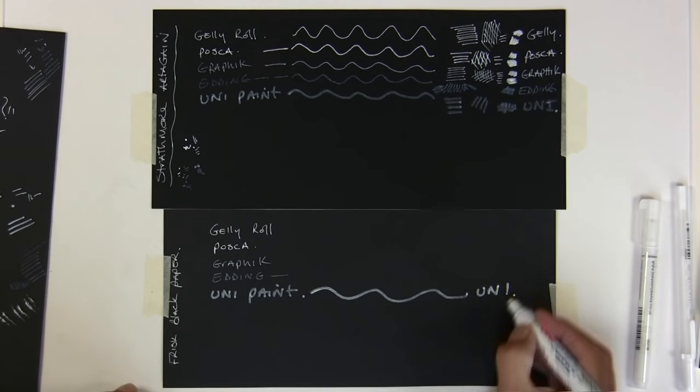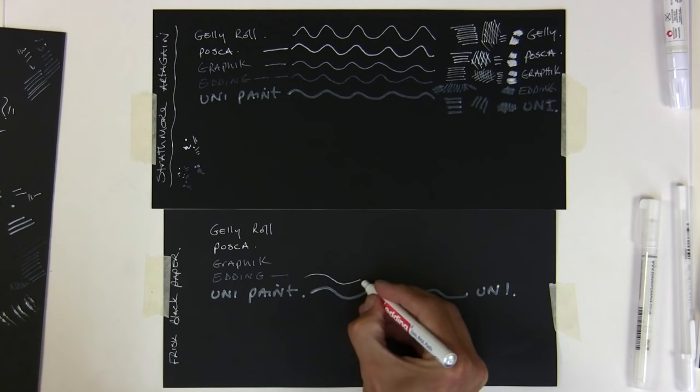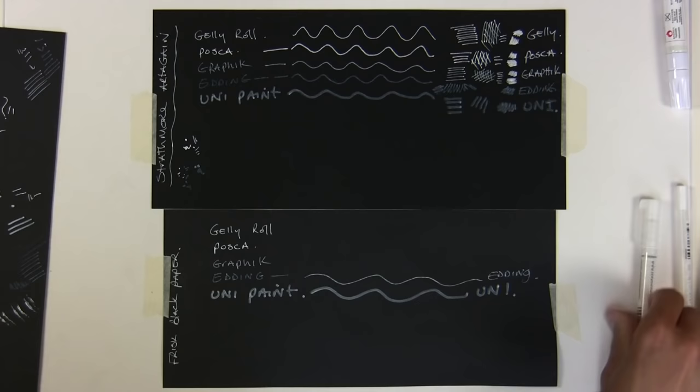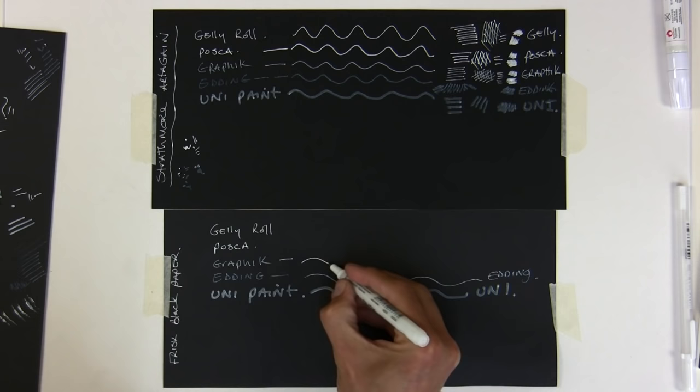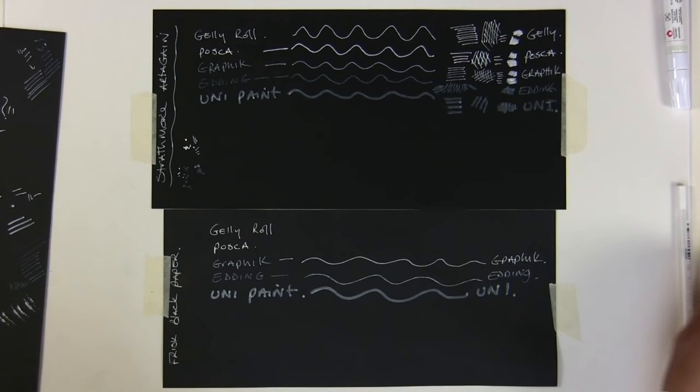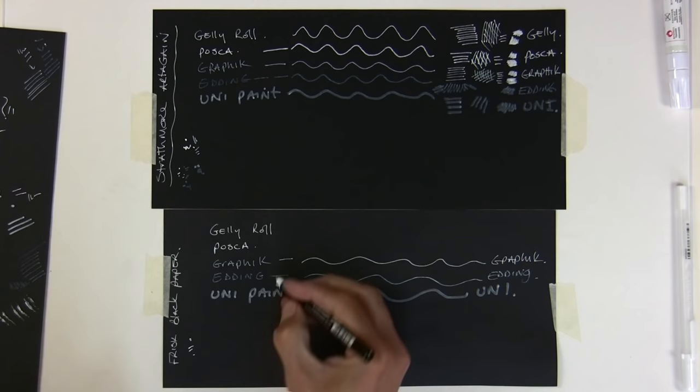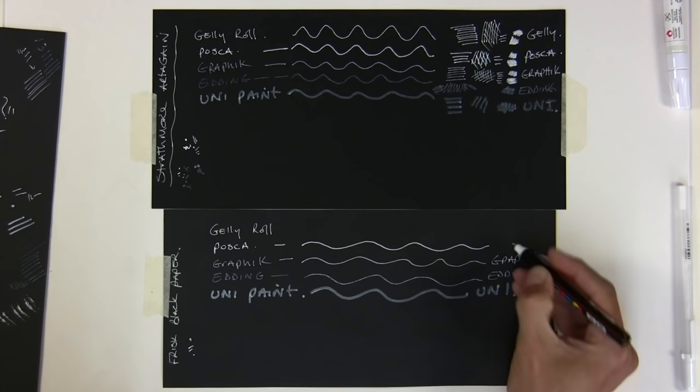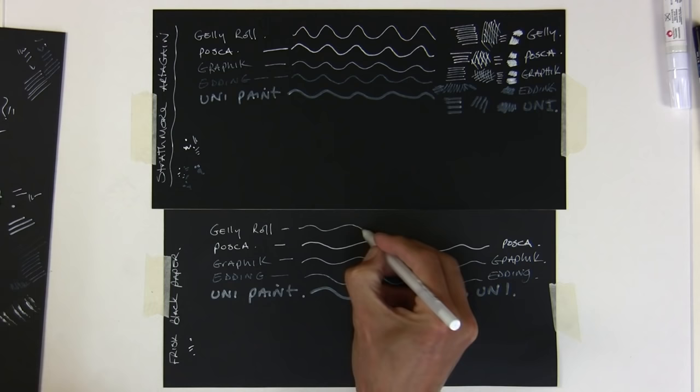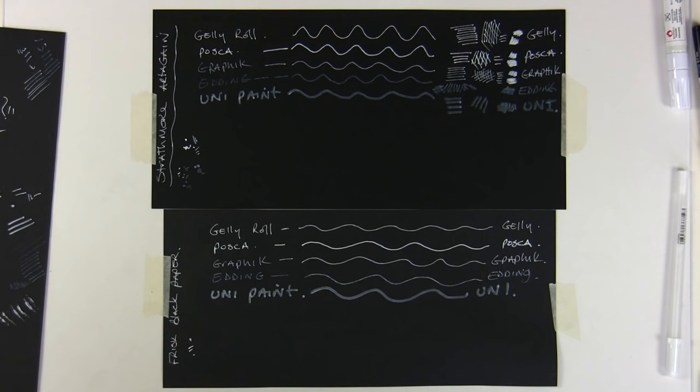Once I've done that, now I'm just going to quickly do it on this cheaper paper as well. Just we've got that on there, uni, the edding. It doesn't seem to disappear as much on this paper. It's not great though for sure. Graphic, nice pen, flowing well. And these pens can be quite a few pound each as well, so it's worth knowing what's going to be good, what's worth you spending your money on, what's not. And finally, the jelly roll. So you can see them on both different types of paper.